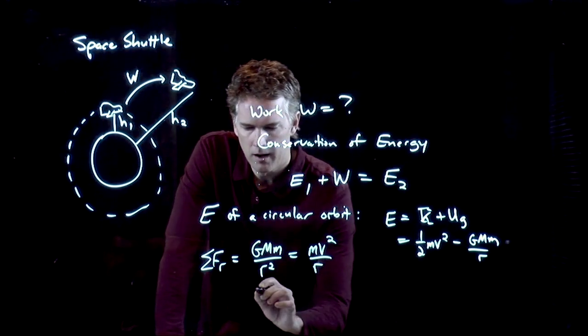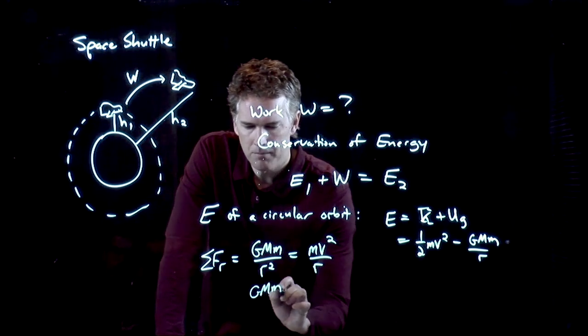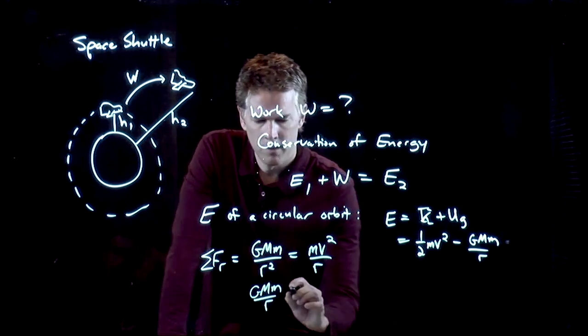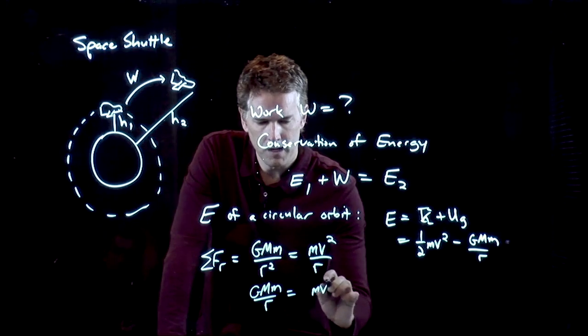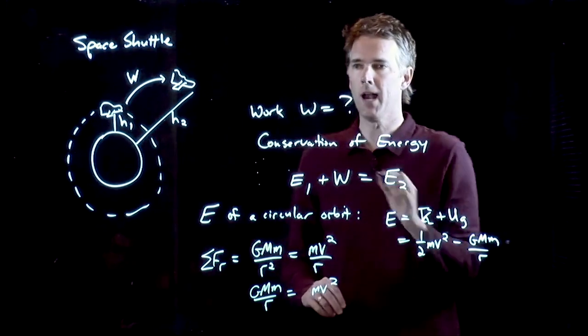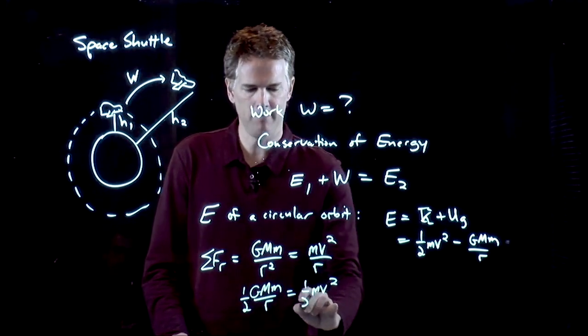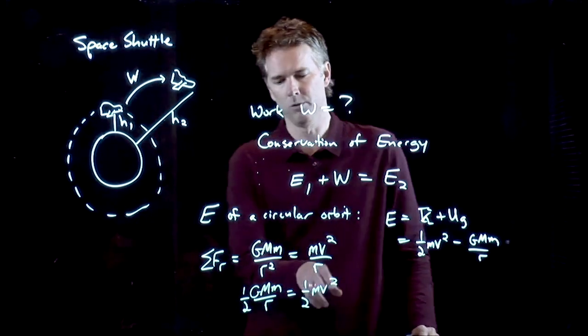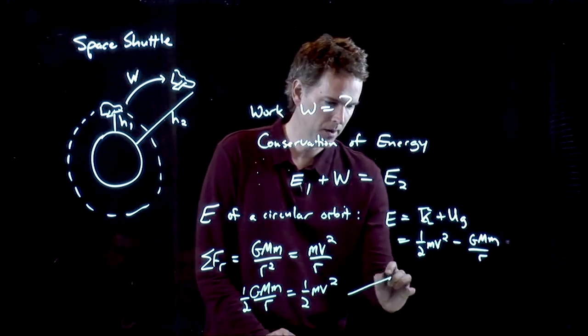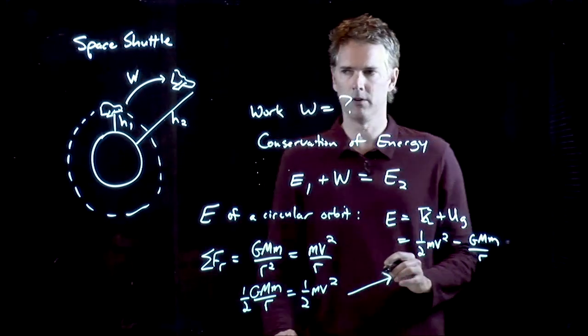Let's do that. I multiply both sides by r. I get GMm over r equals mv². Then I multiply both sides by a half. So I get 1/2 GMm over r equals 1/2 mv². And now I put that into this equation over here.